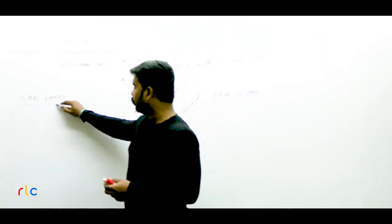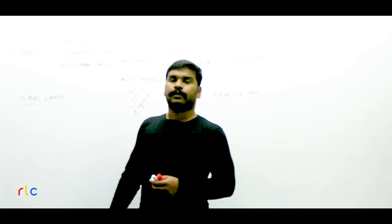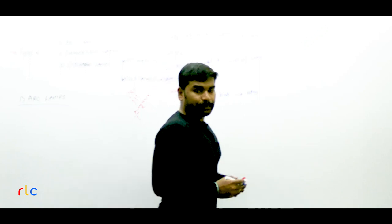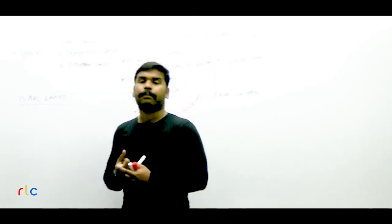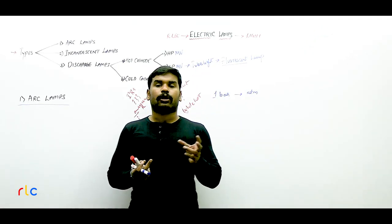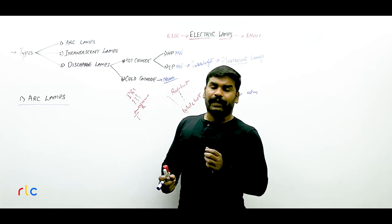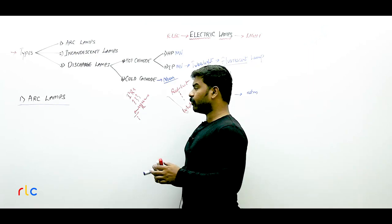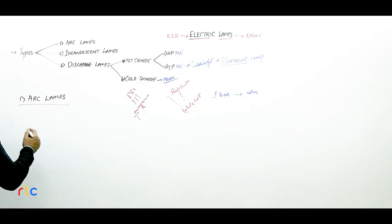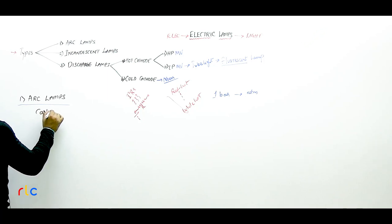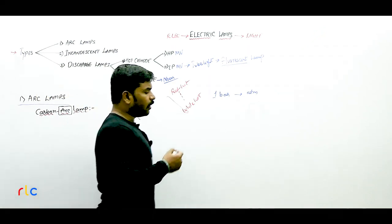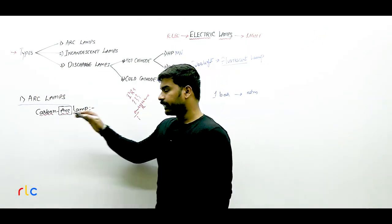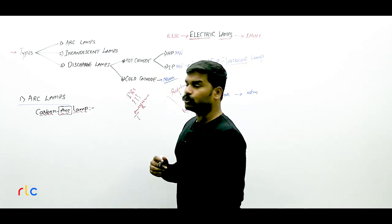Now, arc lamps are again classified into three subcategories: carbon arc lamp, flame arc lamp, and magnetic arc lamp. The most important and relevant for competitive exams is the carbon arc lamp. Before studying carbon arc lamps, there is one important concept — the arc — and we must be clear about the phenomenon of arc in electrical engineering.